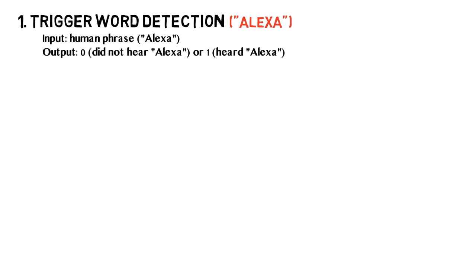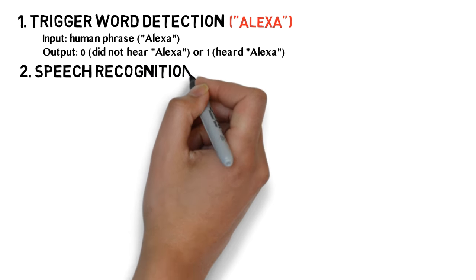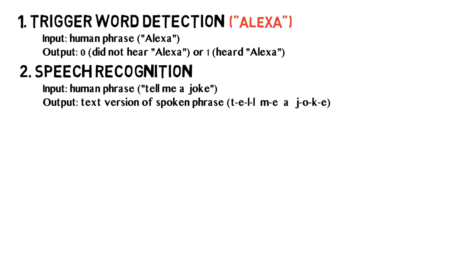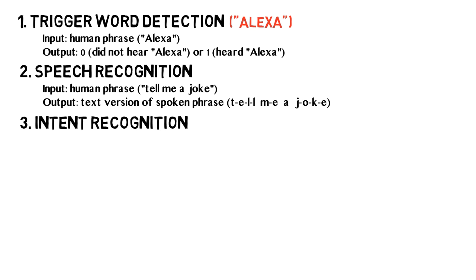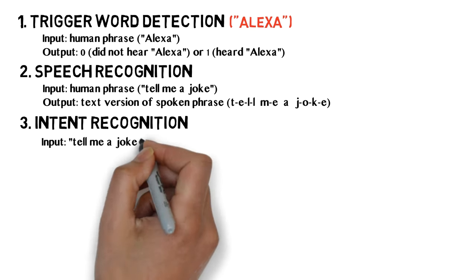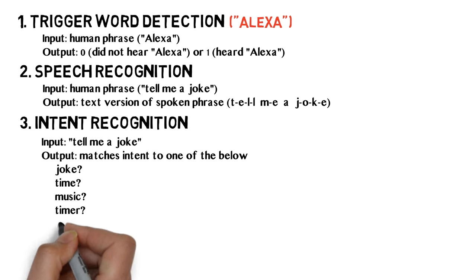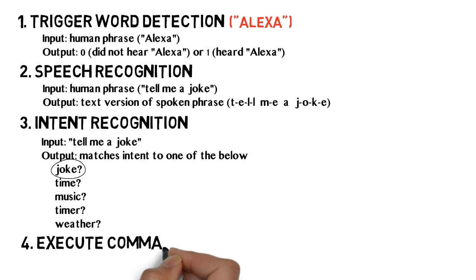Next, Alexa will use speech recognition to detect the words after 'Alexa' and translate this audio into a text transcript. Intent recognition is the next step, where Alexa will use NLP to figure out exactly what you are telling it to do — your intent. It will use another algorithm that takes in your words as input and matches it to one of the operations in a preprogrammed list. Lastly, Alexa will execute your command — in this case, telling you a joke.